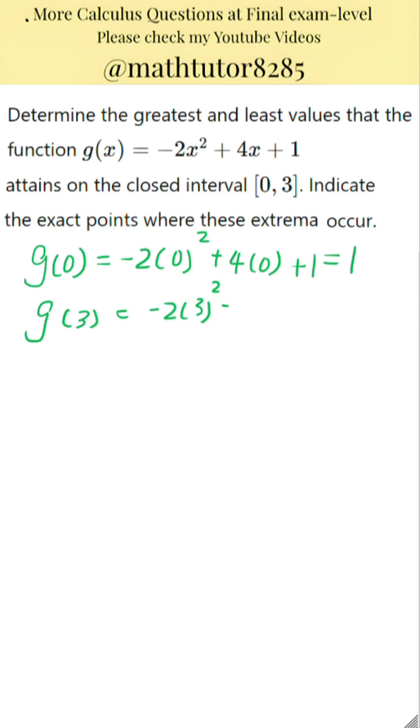When x is 3, the function becomes negative 2 times 3 squared plus 4 times 3 plus 1. That equals negative 18 plus 12 plus 1, which gives negative 5.